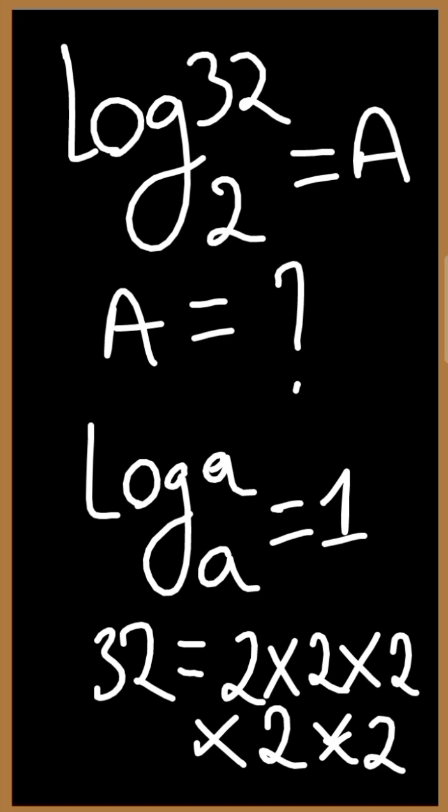Therefore, 32 in index form will give us 2 raised to the power of 1, 2, 3, 4, 5. This gives us 32 equals 2 raised to the power of 5.